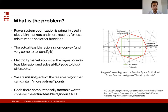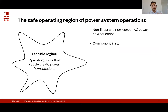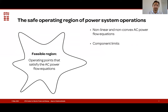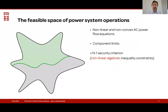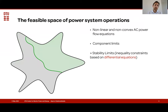The original feasible region is characterized by operating points that satisfy the AC power flow equations — quadratic constraints — making this feasible region a nonlinear non-convex set. Adding component limits further constrains it. On top of that, we have to limit this feasible region by security criteria. For example, the N-1 security criteria, characterized by sets of nonlinear algebraic inequality constraints, limits this region to a sub-region. At the same time, stability constraints limit this feasible region to another sub-region.